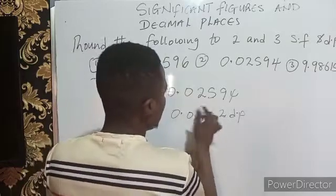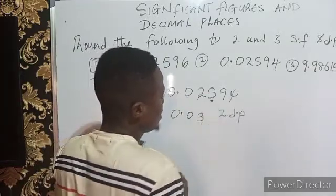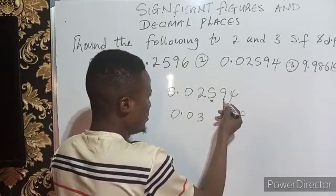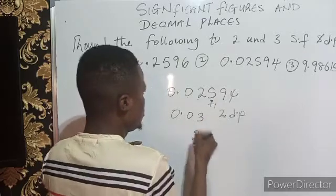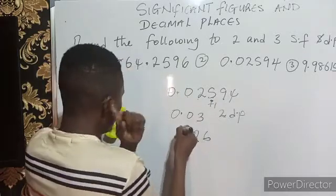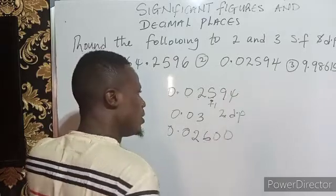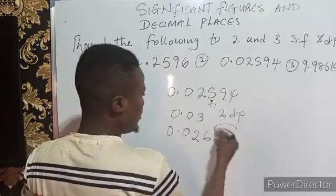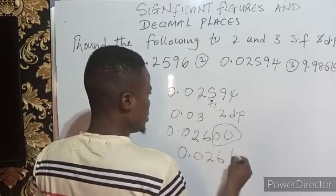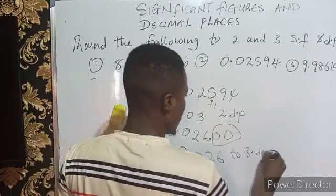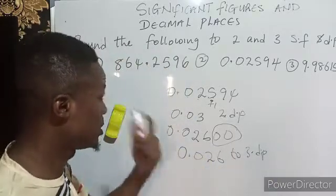To put 0.02594 to three decimal places, you count after the point one, two, three — stop here. This is your target; it is up to five, so you add one: five turns to six. You write 0.026 — every other number turns to zero, but zero is insignificant, so the answer is 0.026 to three decimal places.